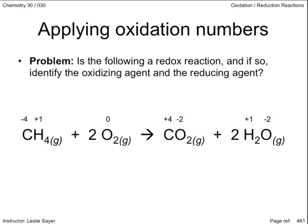Next, we compare the atoms and their oxidation numbers on the reactant side to those on the product side. Notice carbon. On the reactant side, it has an oxidation number of negative 4. On the product side, carbon is a positive 4. Carbon has lost electrons and so has been oxidized. The substance undergoing oxidation is the reducing agent.